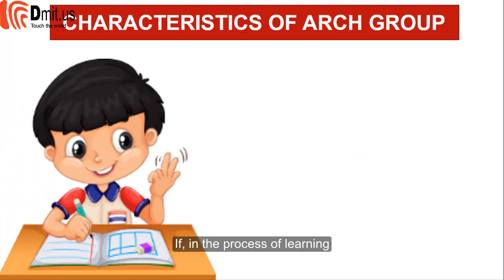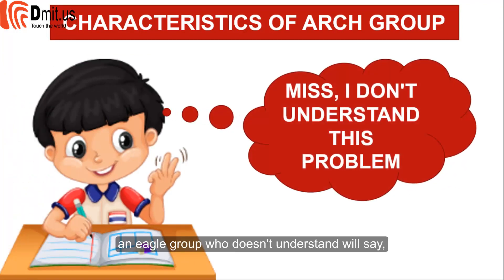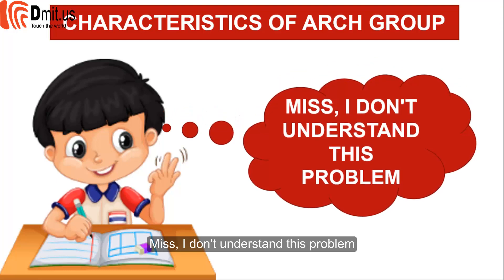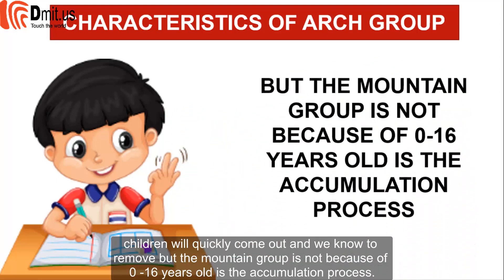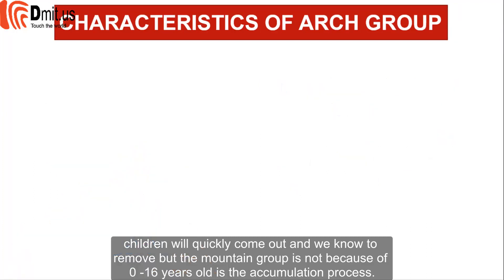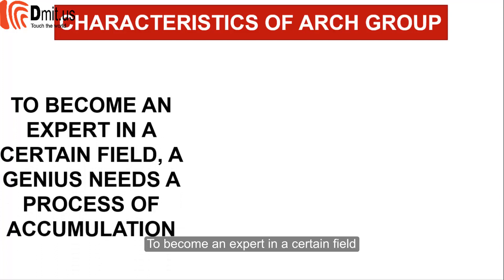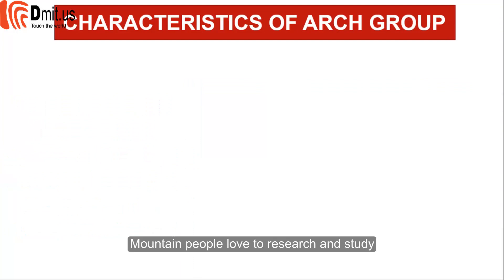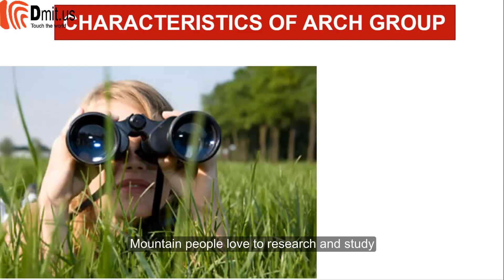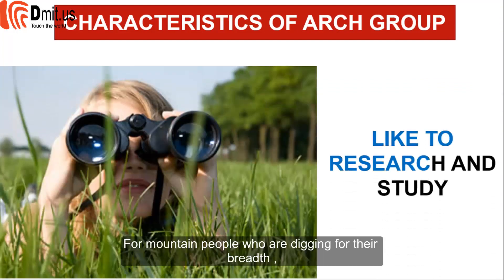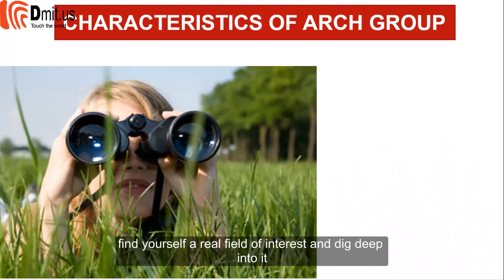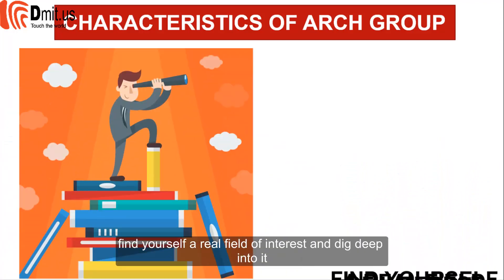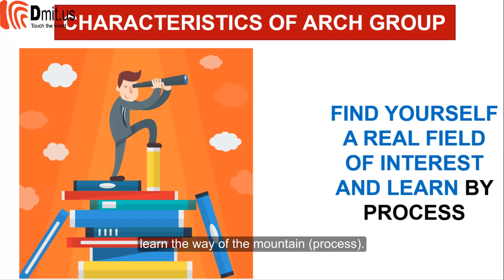In the process of learning, an eagle group student who doesn't understand will speak up immediately, and we know to address it. But the mountain group does not, because ages 0–16 is their accumulation process. To become an expert in a certain field, a genius needs a process of accumulation. Mountain people love to research and study. Find yourself a real field of interest and dig deep into it — learn the way of the mountain: process.